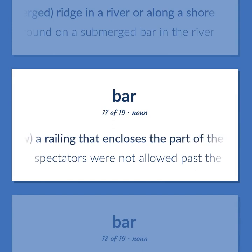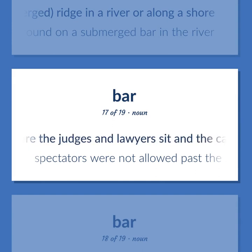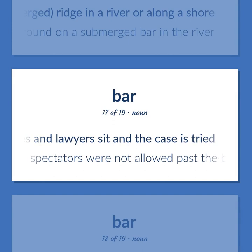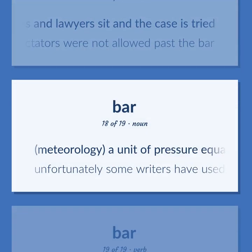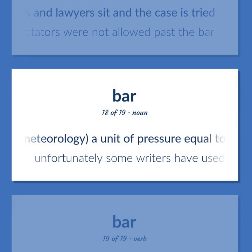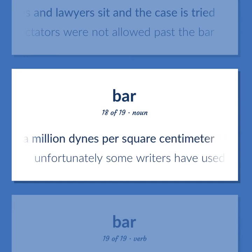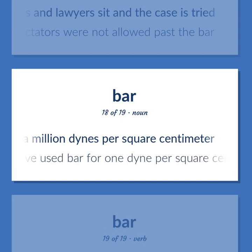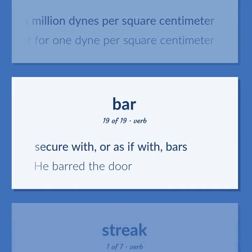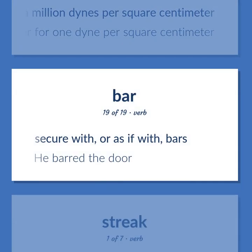Law: a railing that encloses the part of the courtroom where the judges and lawyers sit and the case is tried. Spectators were not allowed past the bar. Meteorology: a unit of pressure equal to a million dynes per square centimeter. Unfortunately, some writers have used bar for one dyne per square centimeter. Secure with, or as if with, bars. He barred the door.